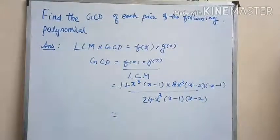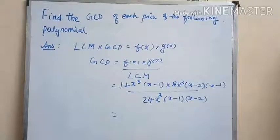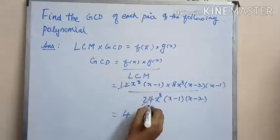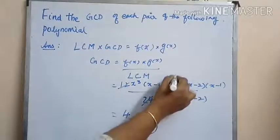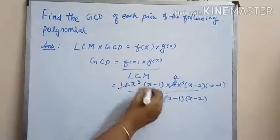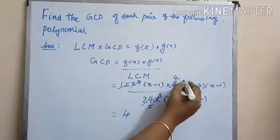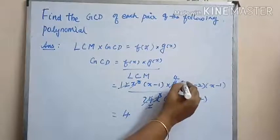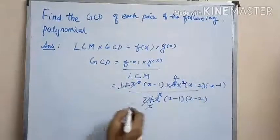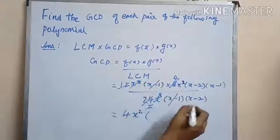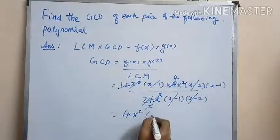After simplification — noting it's x squared not x cubed — we get 4x squared into (x minus 1).